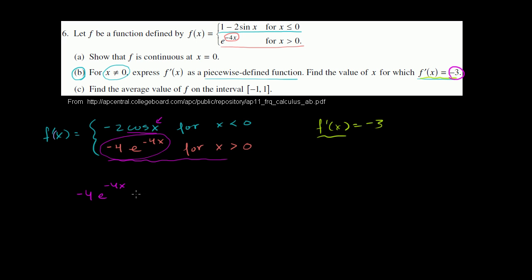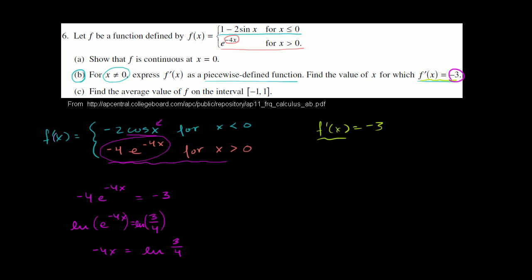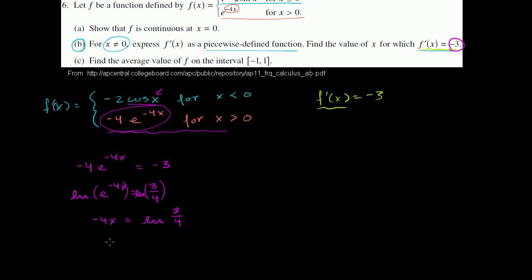So we need negative 4 e to the negative 4x to equal negative 3. Dividing both sides by negative 4 gives e to the negative 4x equals 3 fourths. Taking the natural log of both sides: negative 4x equals the natural log of 3 fourths. The natural log of e to the negative 4x is just negative 4x by definition. Dividing both sides by negative 4, or multiplying by negative one fourth, gives x equals negative one fourth times the natural log of 3 fourths.